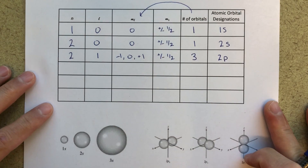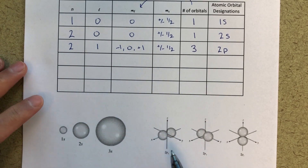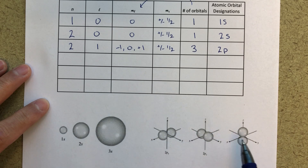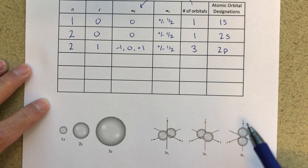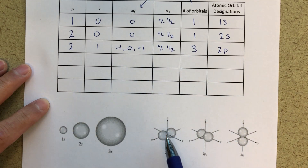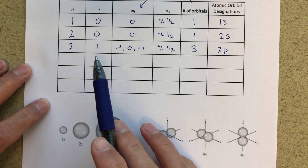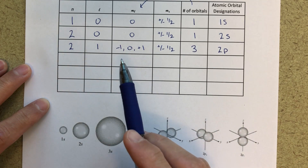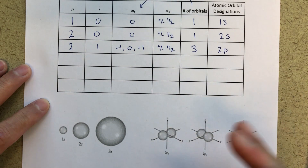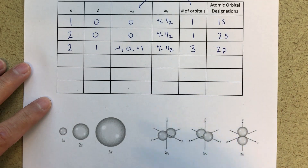The s orbitals are spheres — 1s, 2s, 3s just get bigger and bigger. The p orbitals have three different orbitals arranged on different axes: one on the x-axis, one on the y-axis, and one on the z-axis. Each one of those orbitals corresponds to a set of quantum numbers — for example, 2, 1, minus 1 might refer to one; 2, 1, 0 to another; and 2, 1, plus 1 to the third. The specific M sub L value assigned to each axis is somewhat arbitrary.